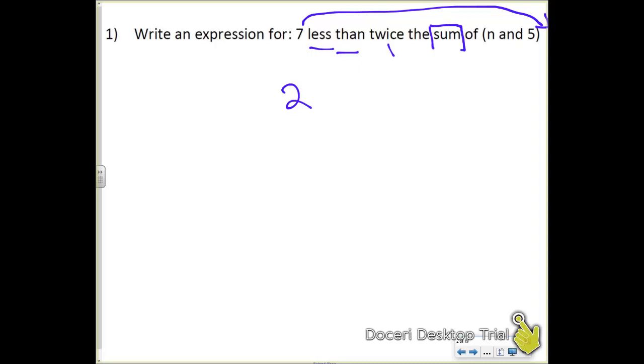The word sum here is the answer to an addition problem. That means you have to put something in parentheses, and you'll notice I did give you a little hint there, so that's going to be n plus 5, and then make sure you go back and do your less than, so it's minus 7 at the back, not at the front.